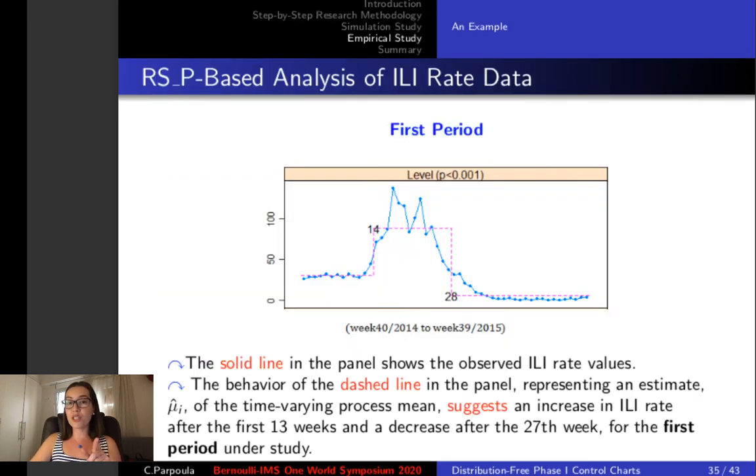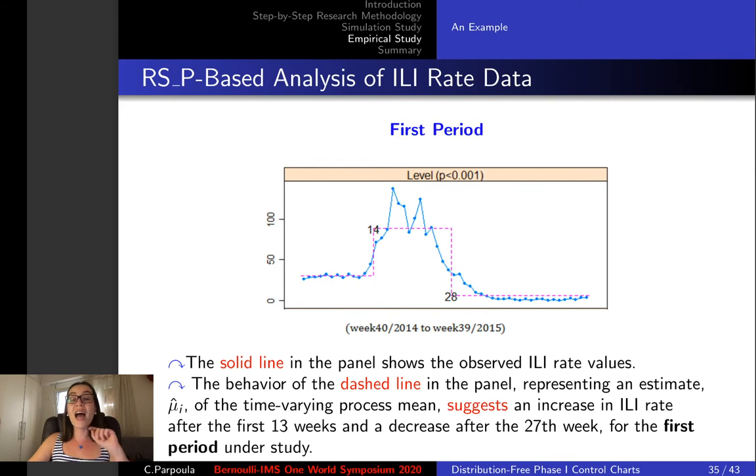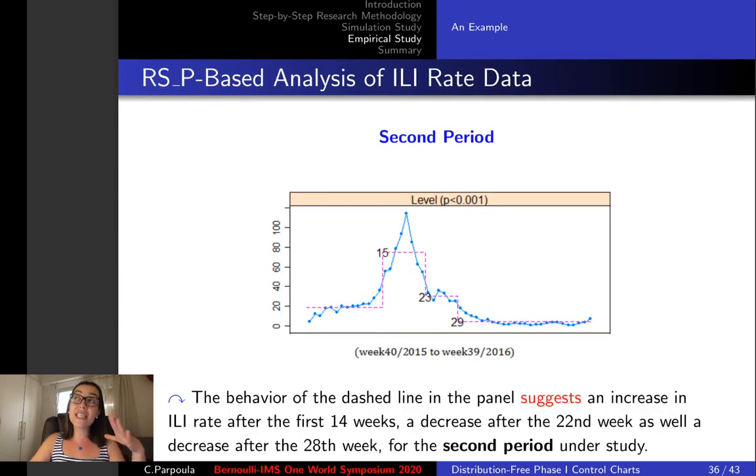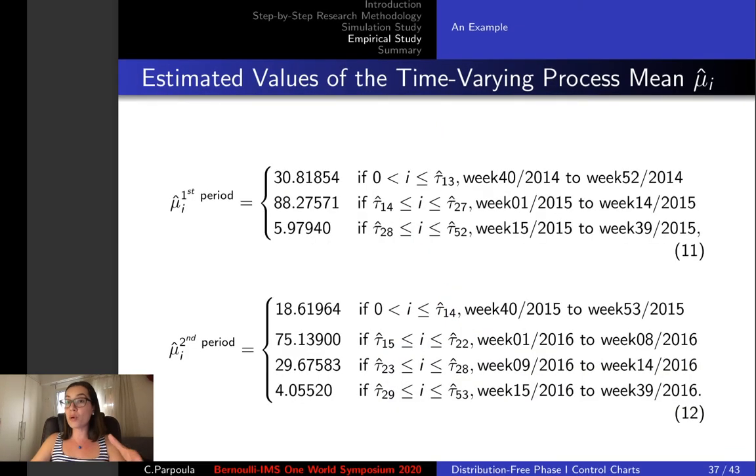We analyzed two-year time series data for Greece from 2014 to 2016. For the first period we observed a two-step shift out-of-control pattern and for the second period under study we observed a three-step shift out-of-control pattern. In this way we estimated the values of the time varying process mean mu i hat for the first and second period.